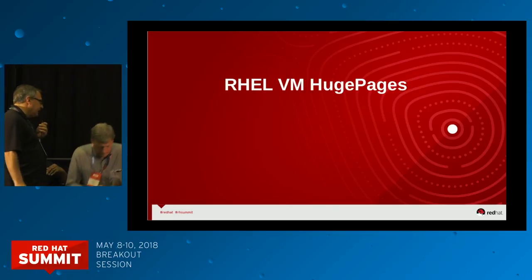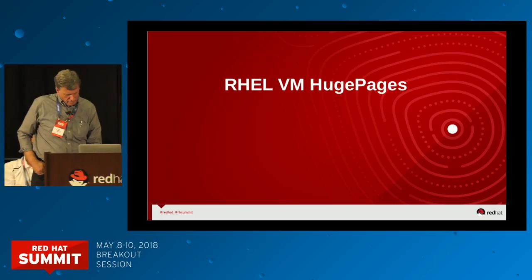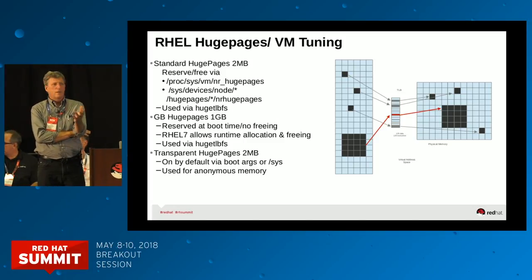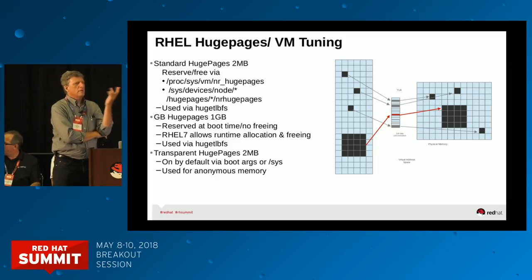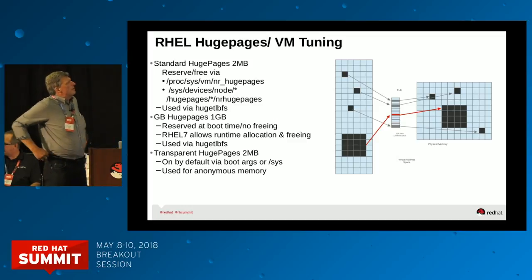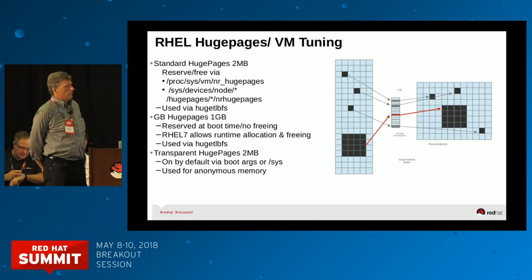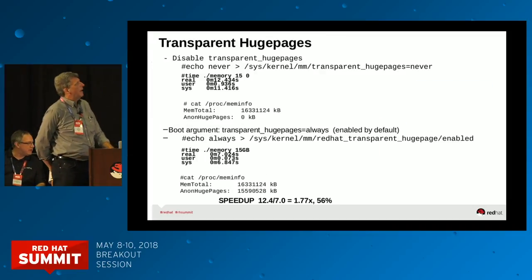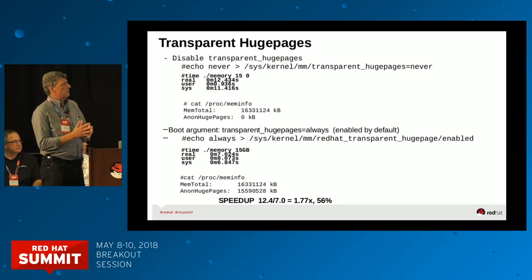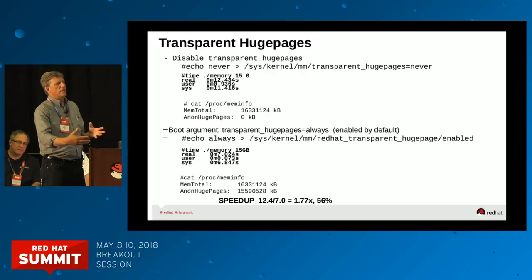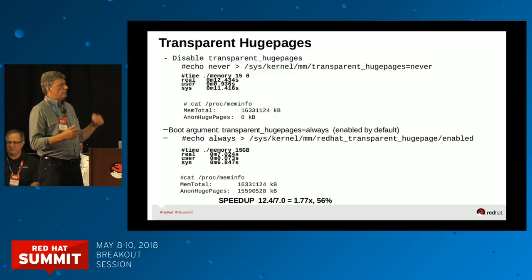Now I'll turn it back to Larry to talk about the architecture around huge pages. As far as huge pages are concerned, the Intel architecture — which is dominant — has basically three page sizes architected into it: 4K, 2 megabyte, and 1 gigabyte page sizes, and we support all of them. There are a couple different mechanisms of using large pages. Transparent huge pages are automatically used for anonymous memory in all cases, as long as the allocation is at least 2 megabytes in size. It allocates a 2 megabyte page and uses hardware assist to map 2 megabytes with a single TLB entry.